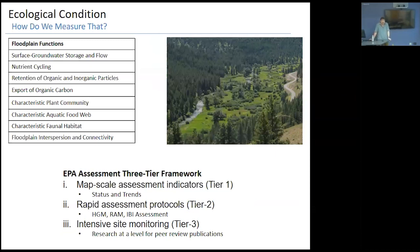Tier 1 is considered the lowest bar and easiest to get to, but from my experience it is not easy at all — it's super hard. It comes from status and trends sources like the National Wetland Inventory.